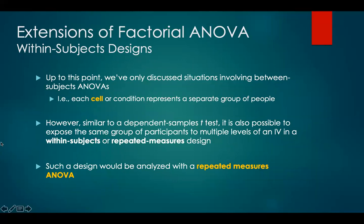Up to this point, we've only discussed between-subjects ANOVAs, where each cell or condition represents a separate group of people. However, similar to a dependent samples t-test, it is also possible to expose the same group of participants to multiple levels of an independent variable in a within-subjects or repeated-measures design, which would be analyzed with a repeated-measures ANOVA.